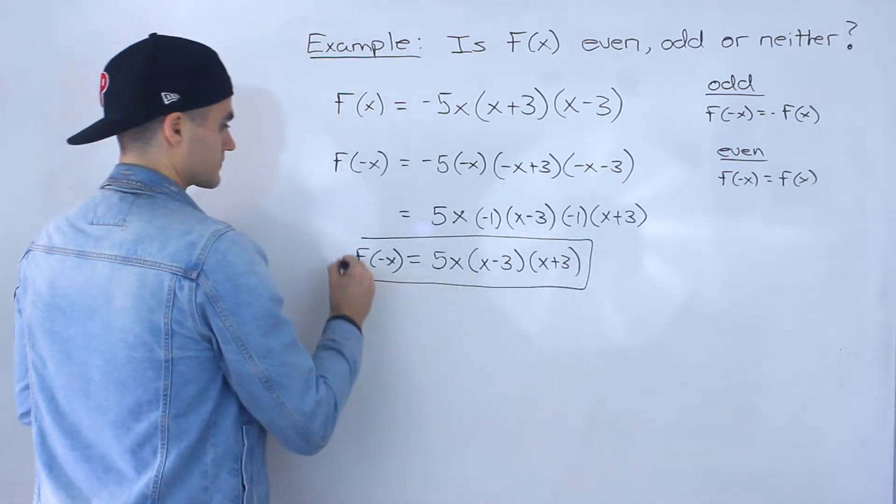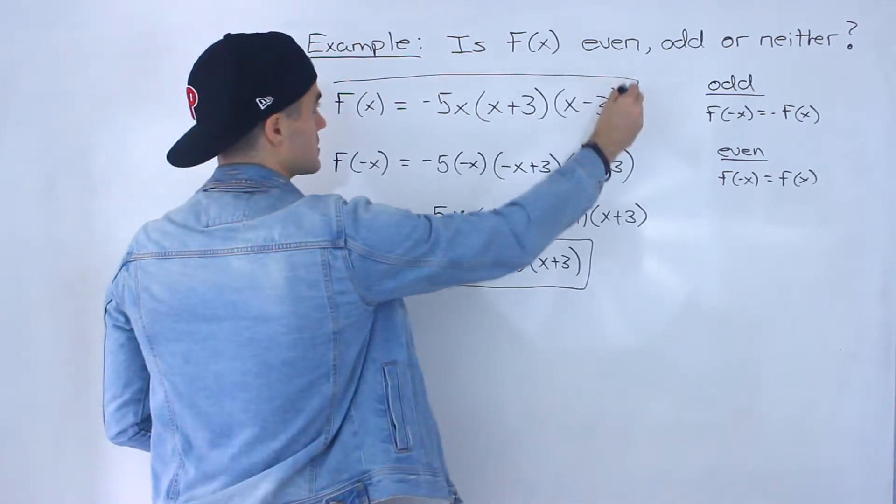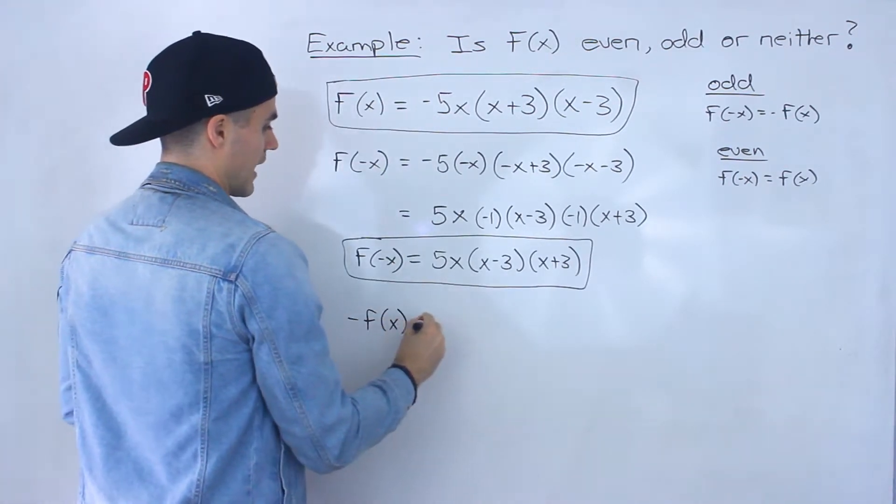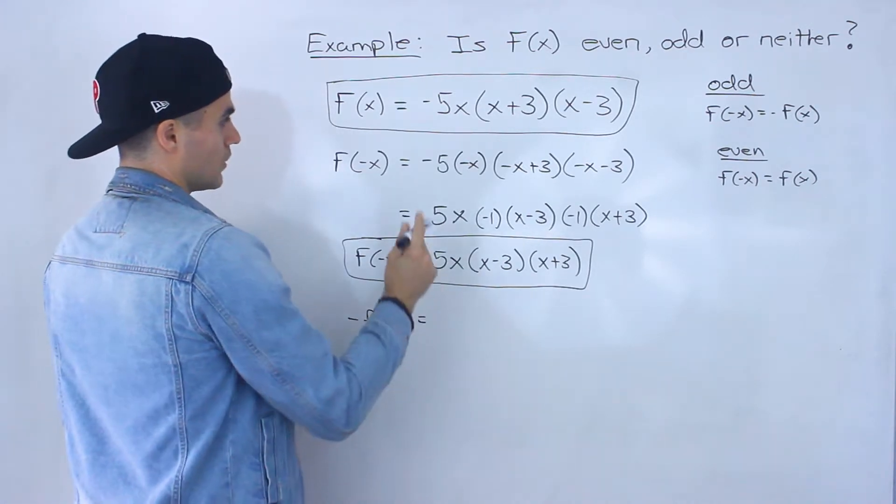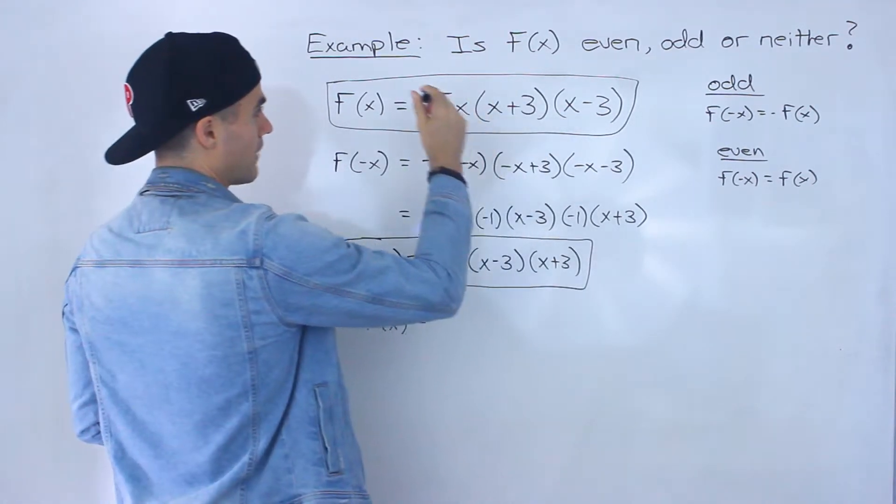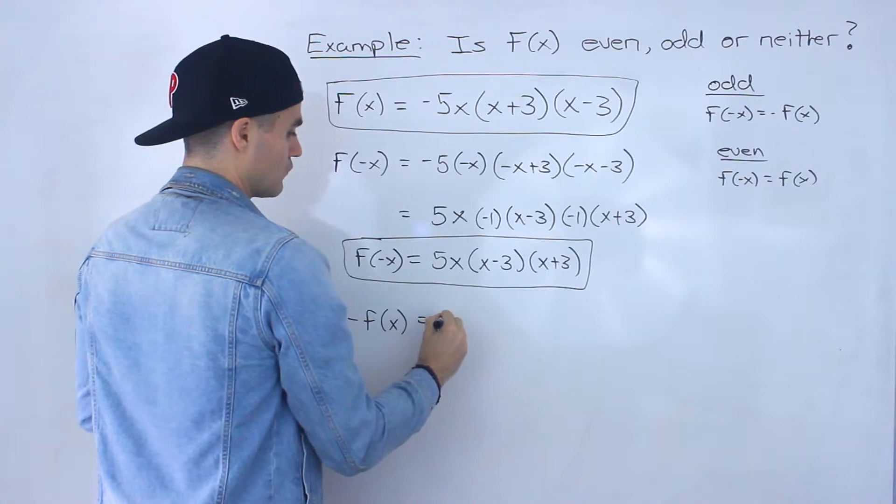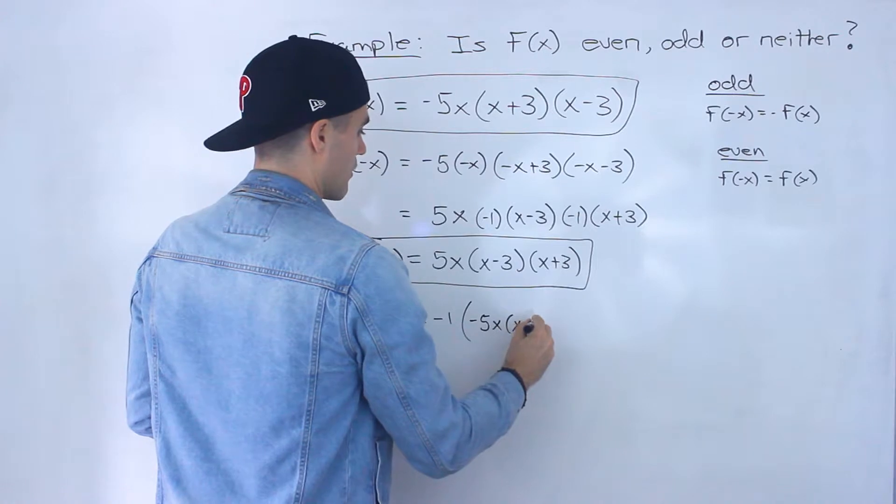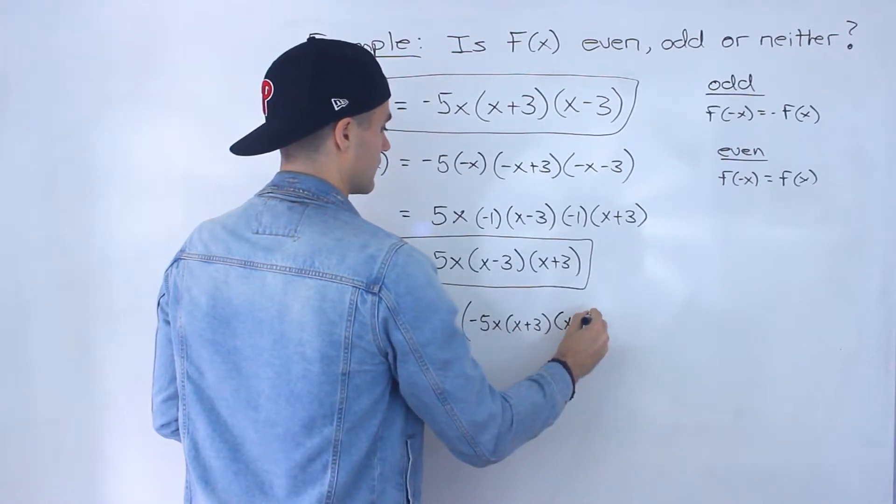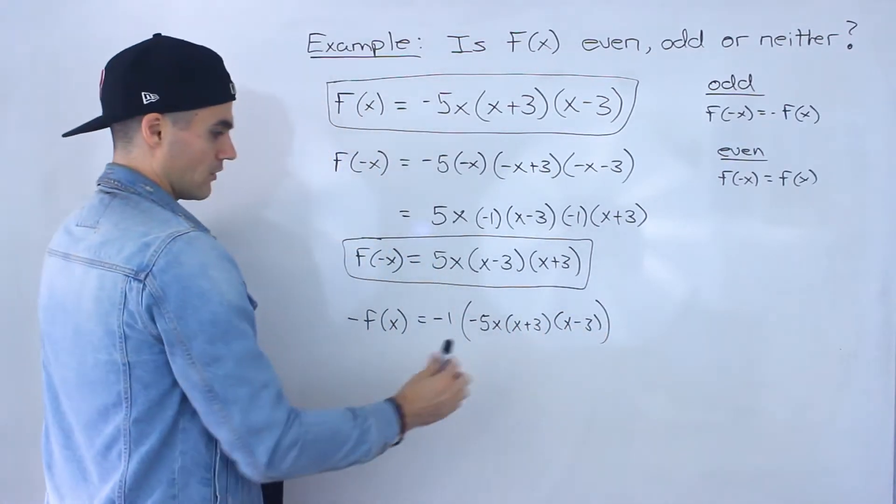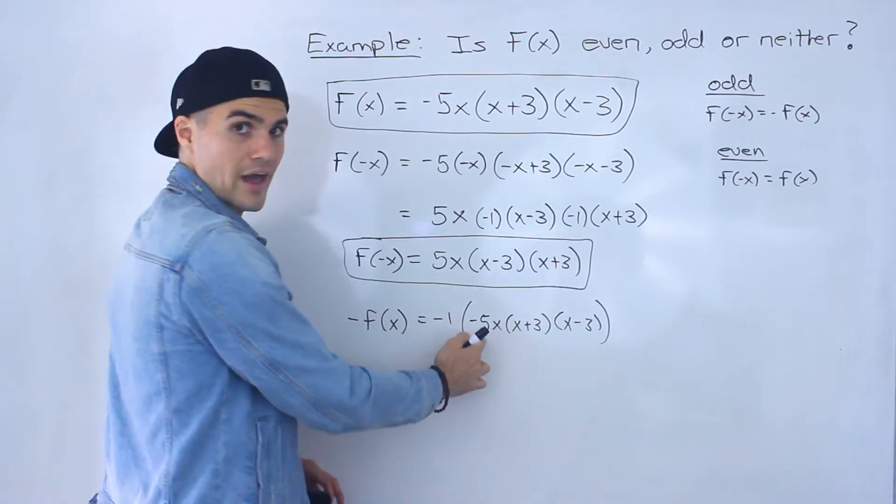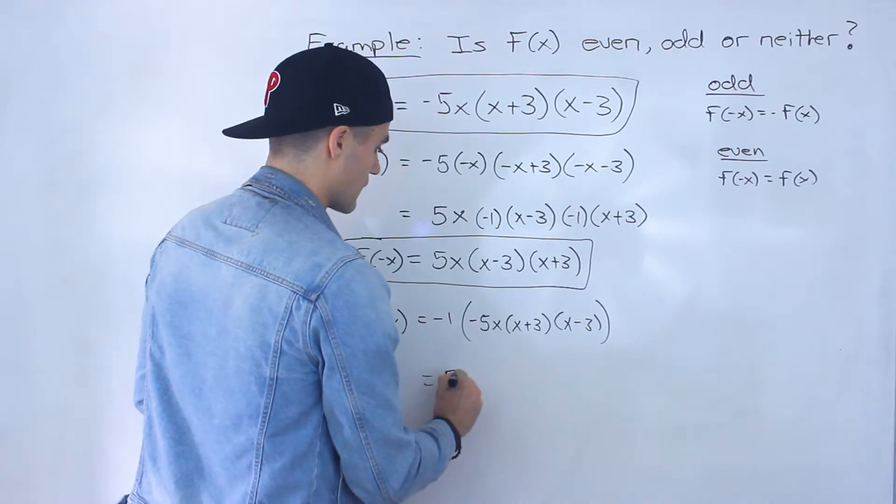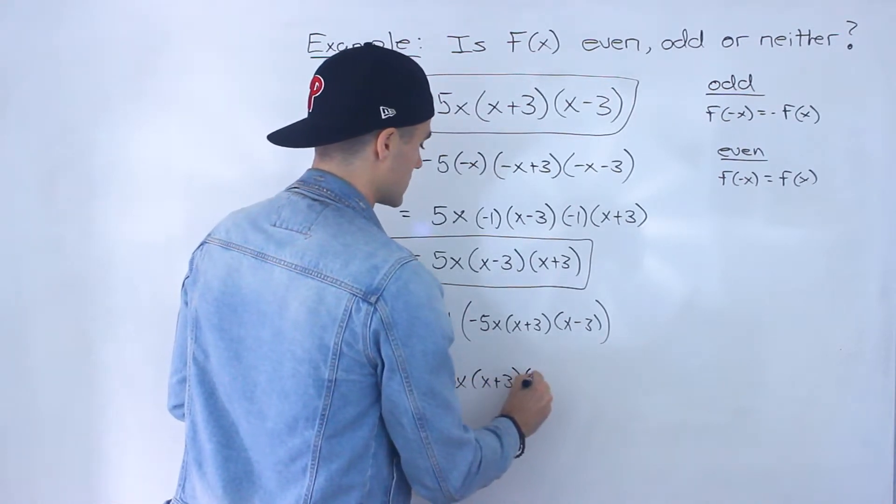We're going to be using this, and we also got to find out what's negative f of x. Negative f of x in this case is very simple—we just multiply this whole thing by negative 1. So we would put a negative 1 in front and then just rewrite that original function. All you do here is take that negative 1 and multiply it by this first expression, so you would end up with positive 5x times x plus 3 times x minus 3.